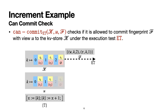Now the client wants to commit the fingerprint to the key-value store, but before that we need to check if it is allowed. We use a can-commit predicate to check: given the key-value store k and the view u, whether a fingerprint is allowed to commit under an execution test ET. Recall that an execution test corresponds to a consistency model.